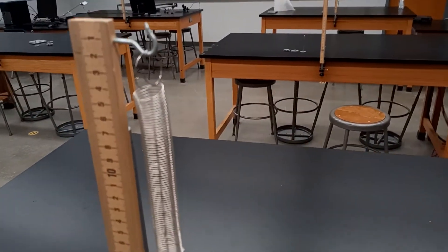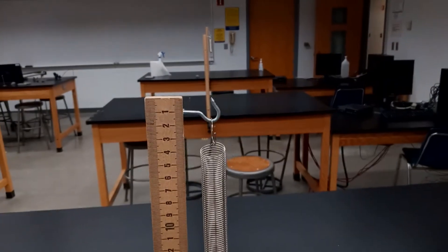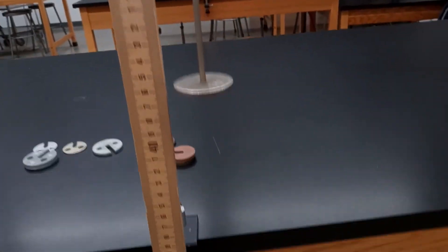In this experiment, you'll measure the oscillation period of a mass on a spring. This mass holder has a mass of 50 grams. We have some additional masses to add, and the spring itself is mounted on a vertical ruler with a length of 60 centimeters.